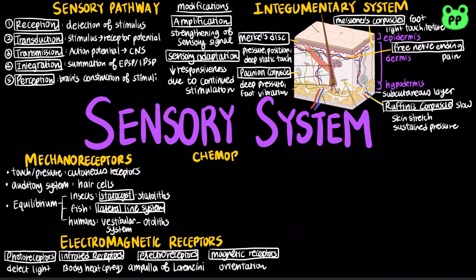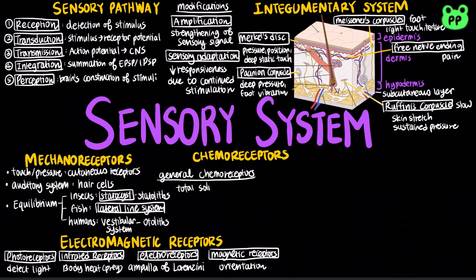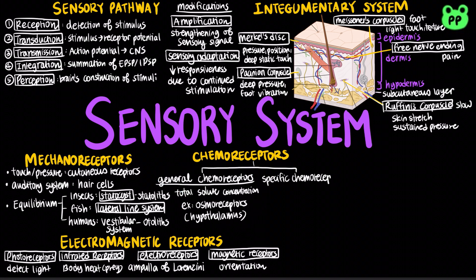Chemoreceptors detect changes in chemical concentrations. There are two types of chemoreceptors. General chemoreceptors transmit information about the total solute concentration of a solution, such as the osmoreceptors found in the hypothalamus, which sense changes in the blood glucose and ion concentrations.